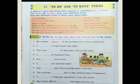With 'I' we use am, was, have, or had. With he, she, it, and singular nouns we use is, was, has, or had.